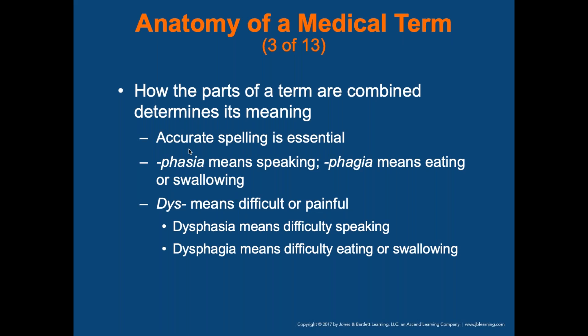For example, 'phagia' meaning speaking versus 'phagia' meaning eating or swallowing — notice the difference. 'Dys' means difficult or painful, so 'dysphagia' means difficulty speaking. This is important for stroke assessment, versus having trouble eating or swallowing. Just a couple letter changes — D-Y-S-P-H-A-S-I-A versus P-H-A-G-I-A — completely different meanings.